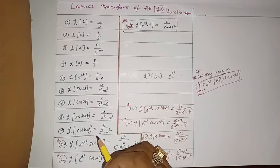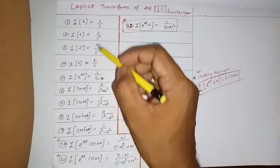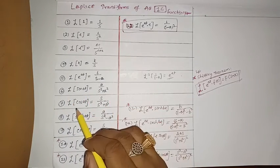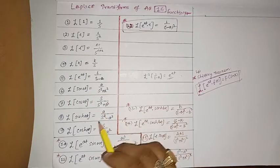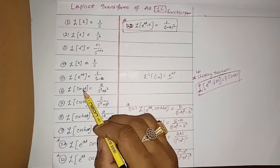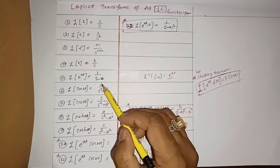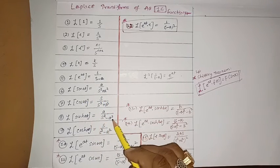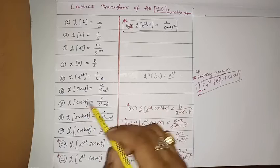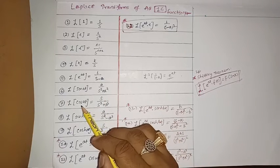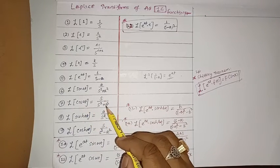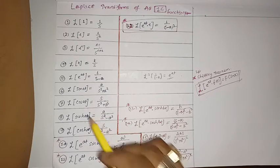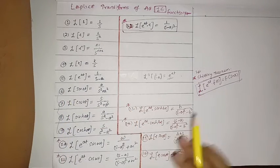Up to function 5 these are the normal ones. For functions 6 onward: sin(at) gives a/(s²+a²), cos(at) gives s/(s²+a²), sinh(at) gives a/(s²-a²), cosh(at) gives s/(s²-a²). Notice that for sin(at) and sinh(at), 'a' is common in the numerator, while for cos(at) and cosh(at), 's' is in the numerator.